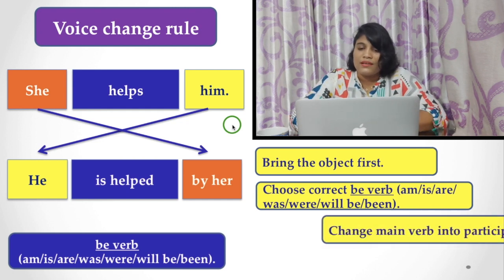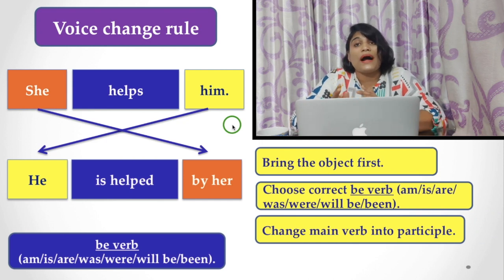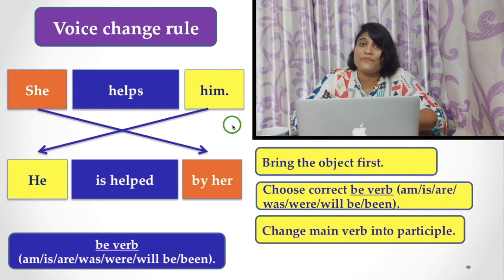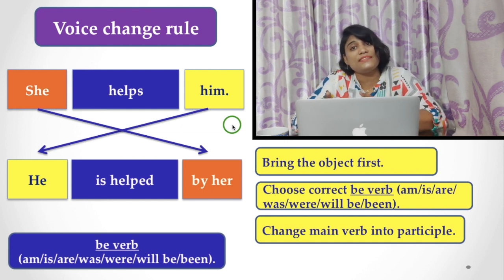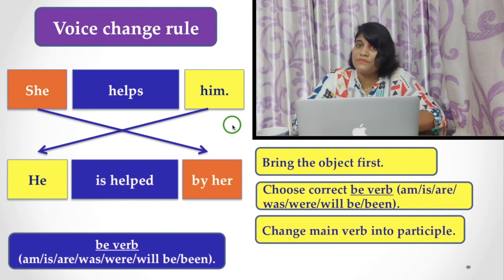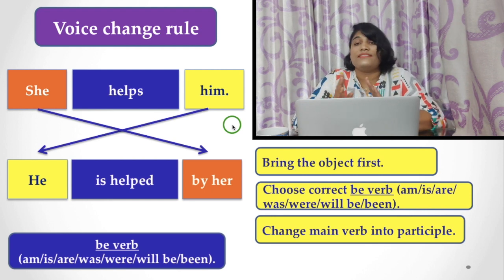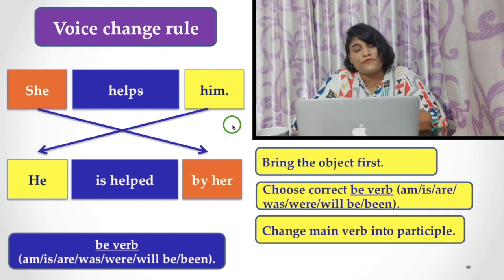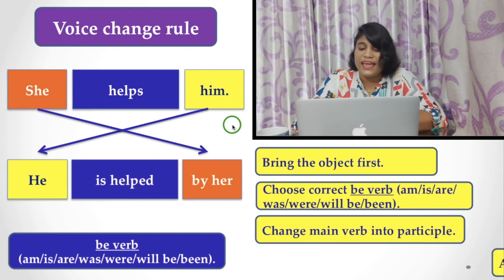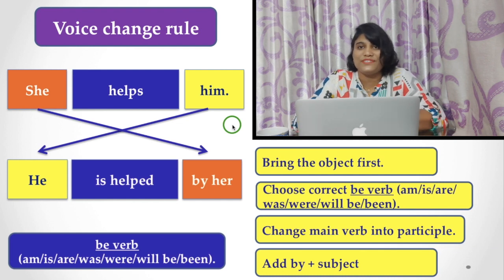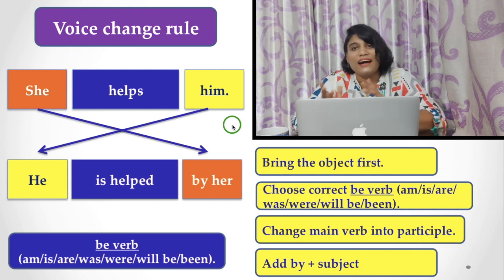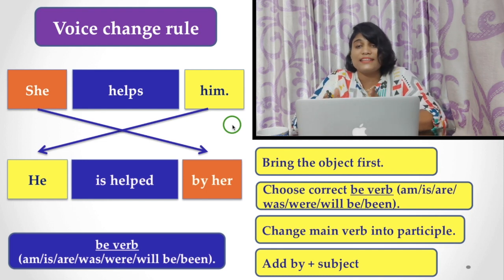Next, change the main verb to its participle form — the third form of the verb. For example: do, did, done. The participle form means the third form of the verb. For 'help,' all three forms are 'help, help, help' — the participle and past form are the same. Finally, add 'by' plus the subject. When the subject becomes the object, you use 'by,' as in 'by her.'